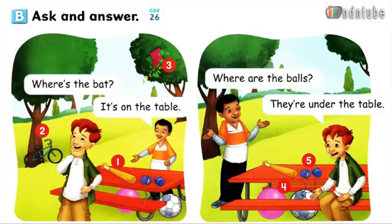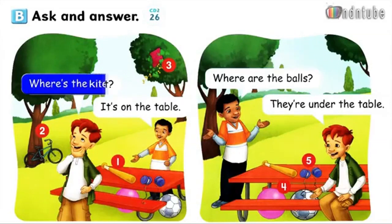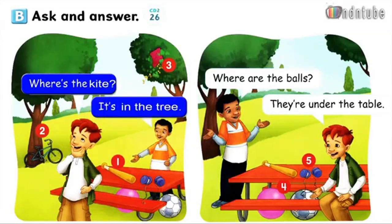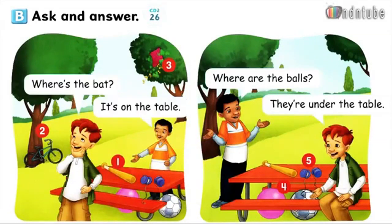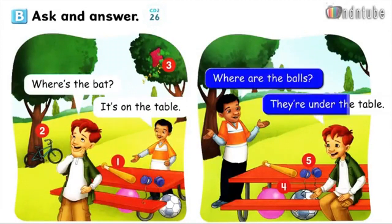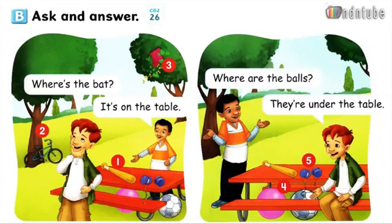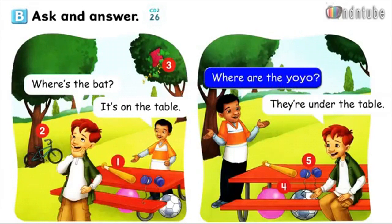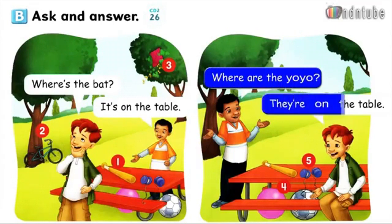Number 3: Where's the kite? It's in the tree. Number 4: Where are the balls? They're under the table. Number 5: Where are the yo-yos? They're on the table.